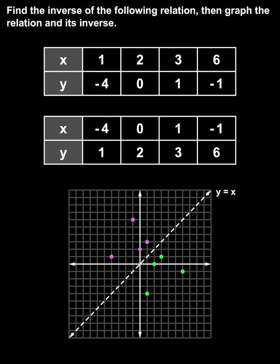notice that the relation and its inverse are mirror images of each other in this line. In other words, the inverse of a relation is the reflection of the original relation in the line y equals x.